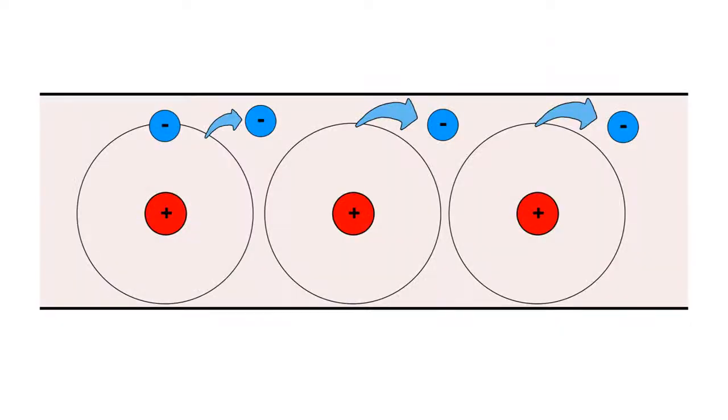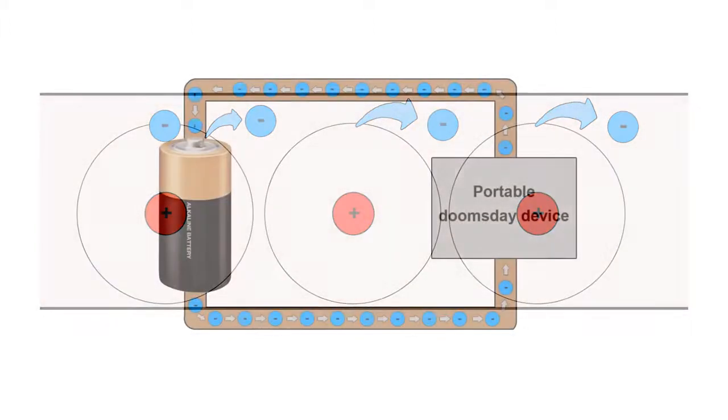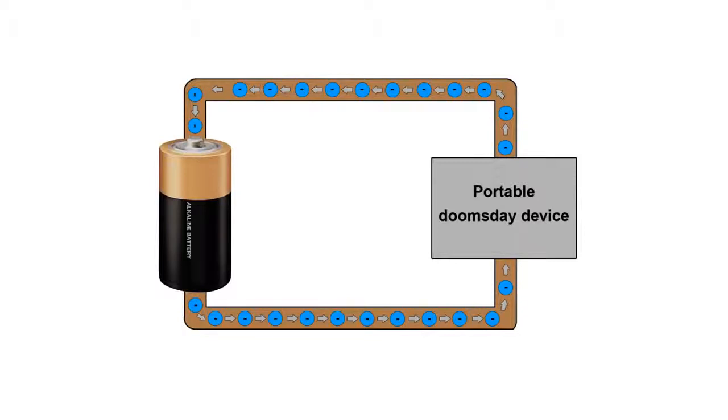Even though each electron is only jumping a tiny tiny distance, this overall flow happens close to the speed of light. And that's basically what the flow of electricity is. When electrons are flowing through something, you can say that electric current is flowing.